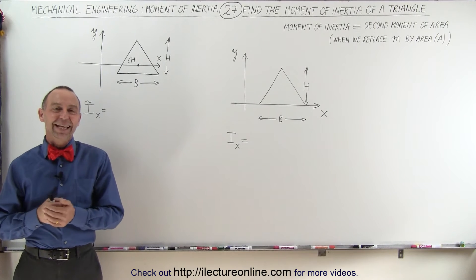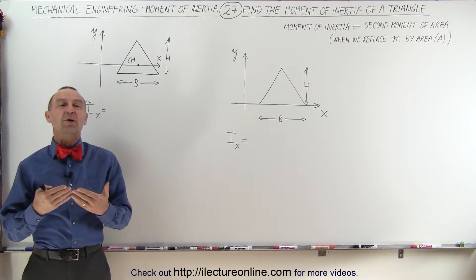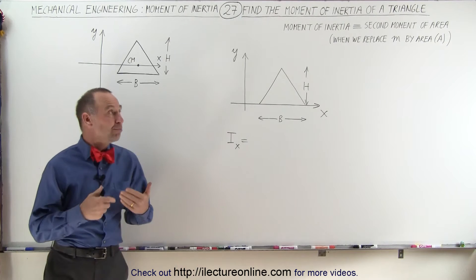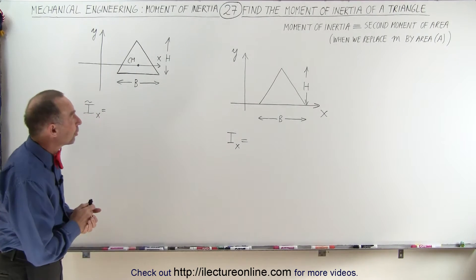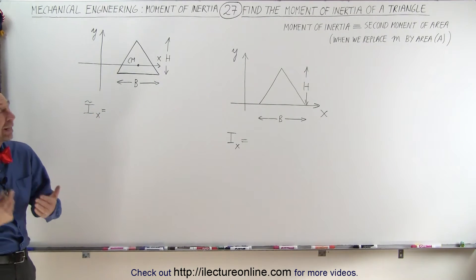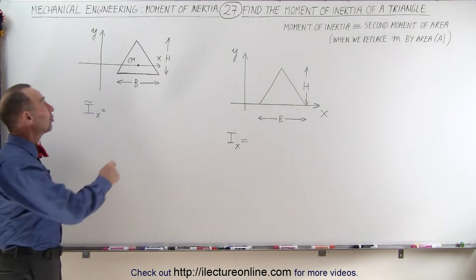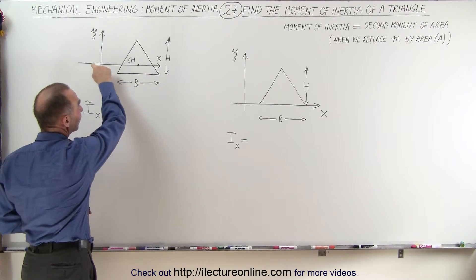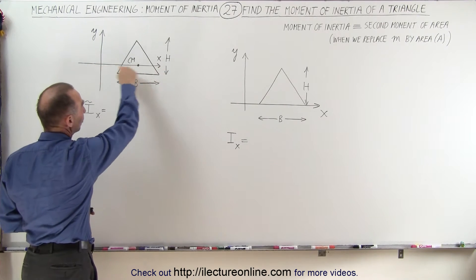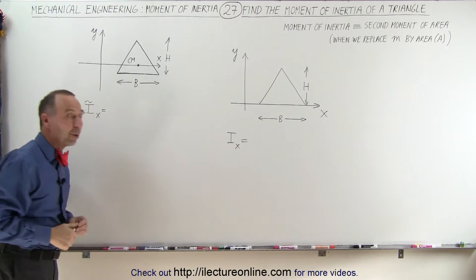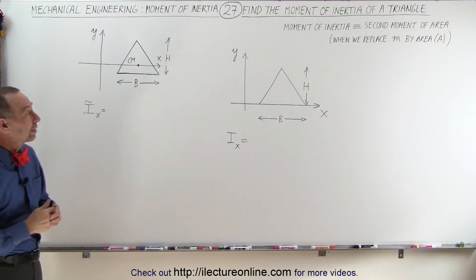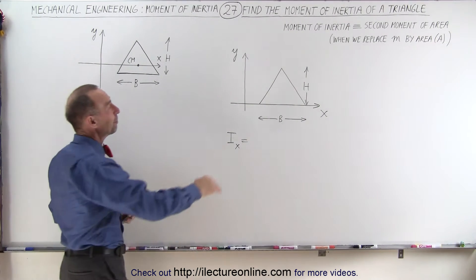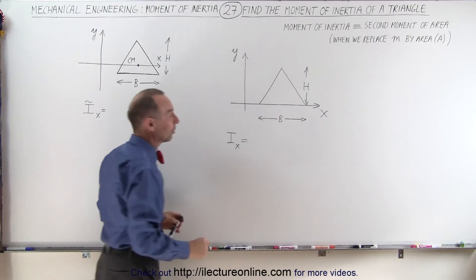Welcome to Electron Line. In this video, we're going to show you what the equations look like for the moment of inertia of a triangle. We could have the triangle in such a way where the center of mass is right on the axis which we're trying to find the moment of inertia relative to, like in this case the x-axis, or we can have the base right on top of the axis.